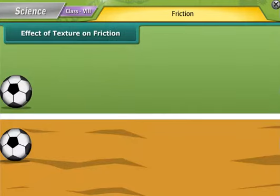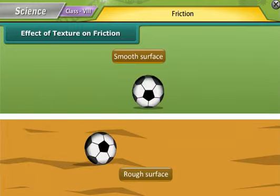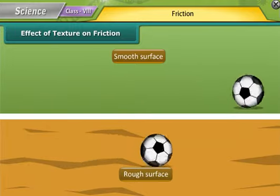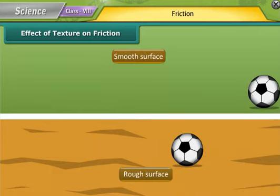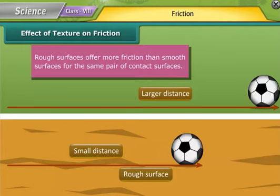A ball is rolled on a smooth surface and another similar ball on a rough surface. Both balls start rolling on different surfaces with the same speed, same force, and at the same time. But the ball rolling on the smooth surface travels a larger distance than the ball rolling on the rough surface. This shows that rough surfaces offer more friction than smooth surfaces, proving that friction depends on the texture of contact surfaces.